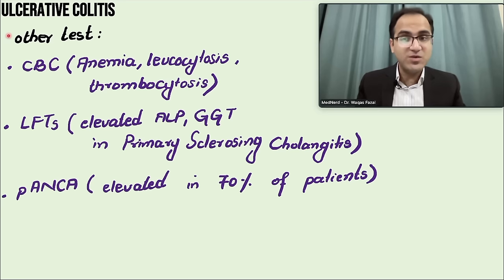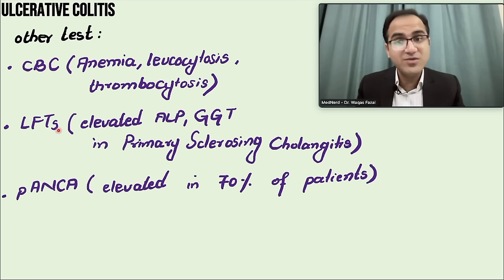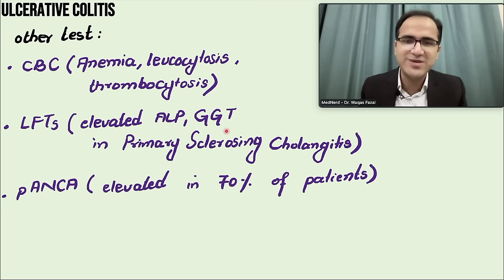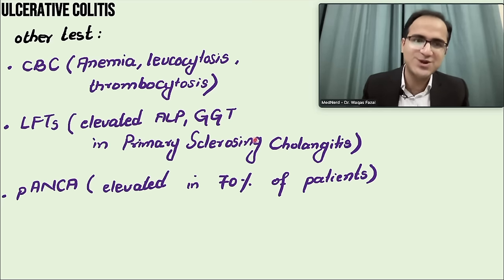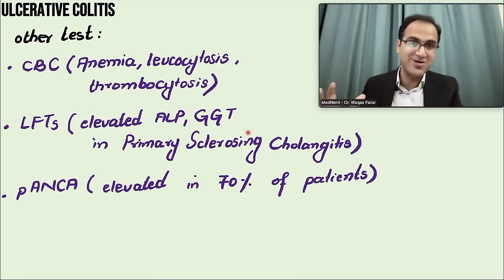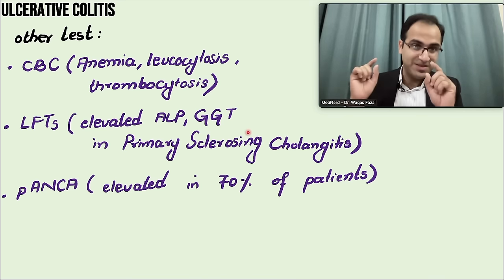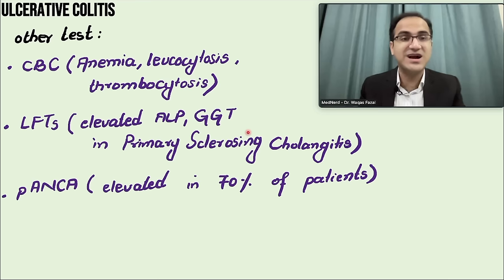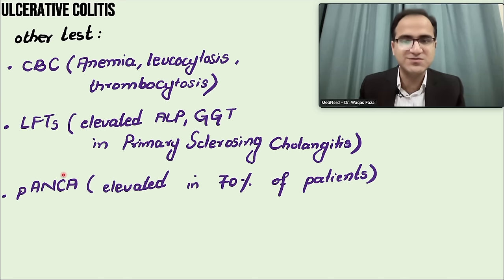Other tests include a CBC to look for anemia. Liver function tests should be performed — elevated ALP and GGT indicate the patient may also have primary sclerosing cholangitis, even if not yet symptomatic, since it is strongly associated with ulcerative colitis.